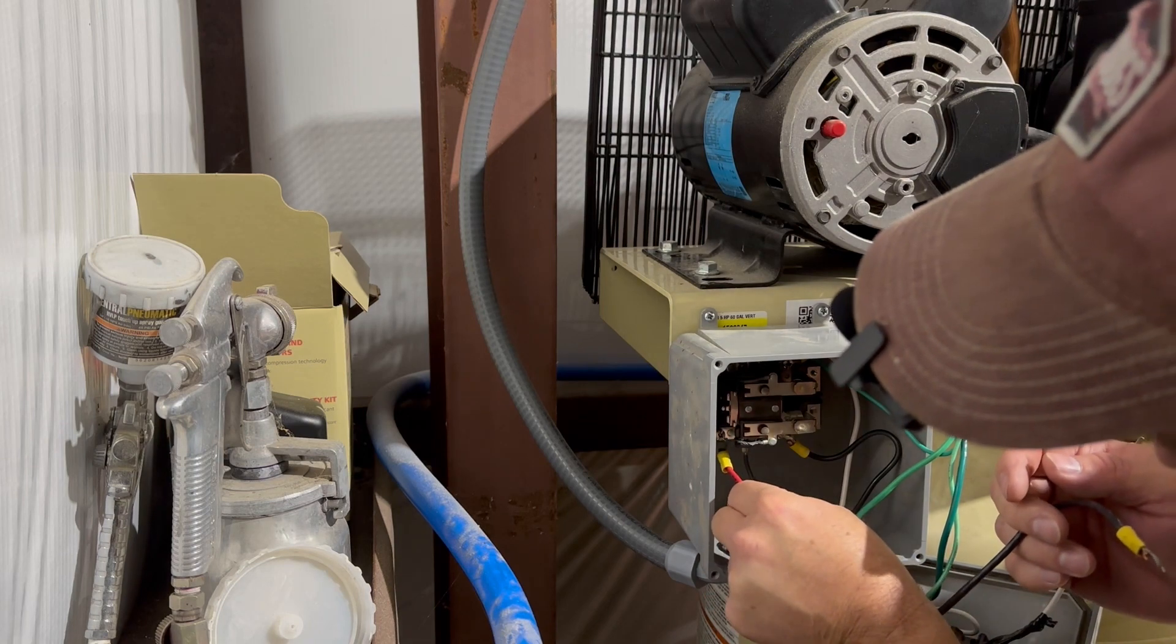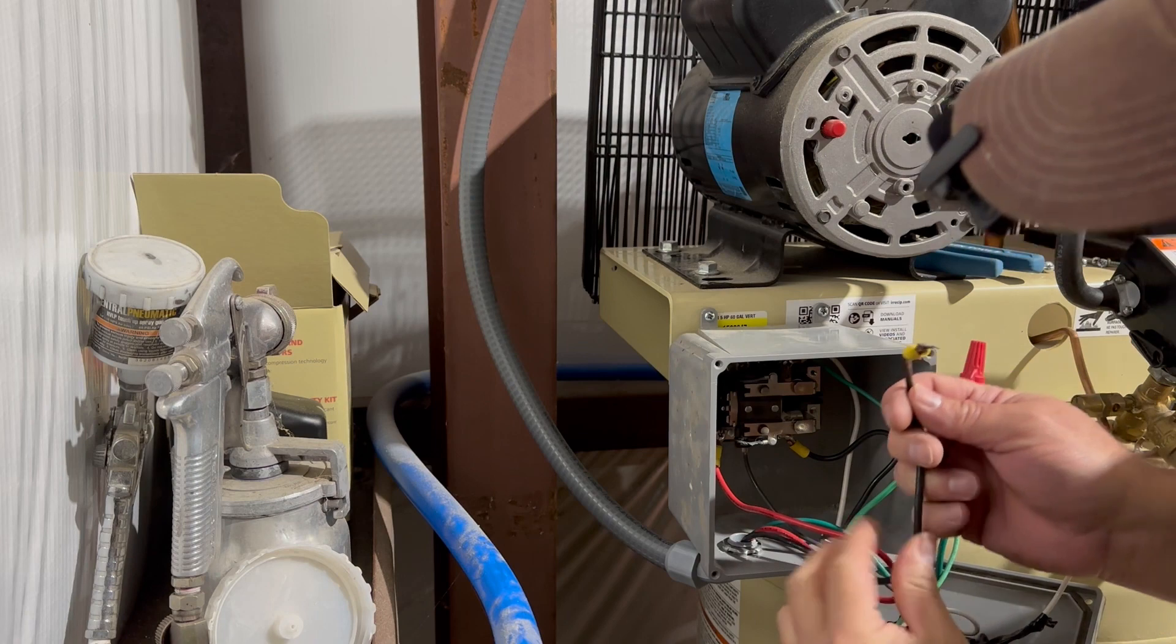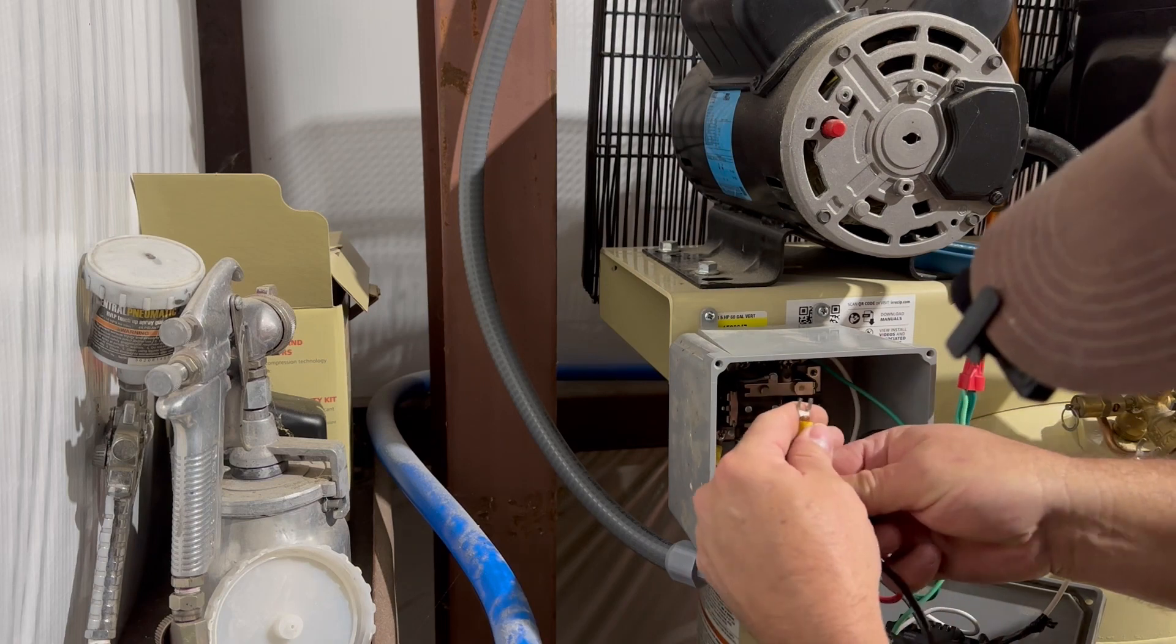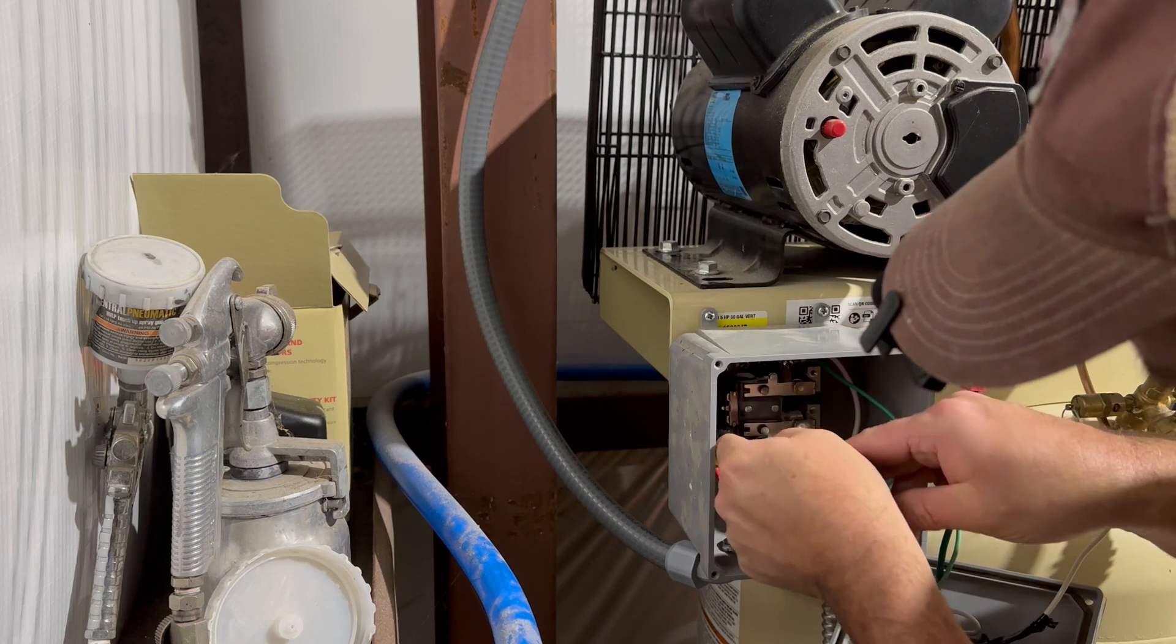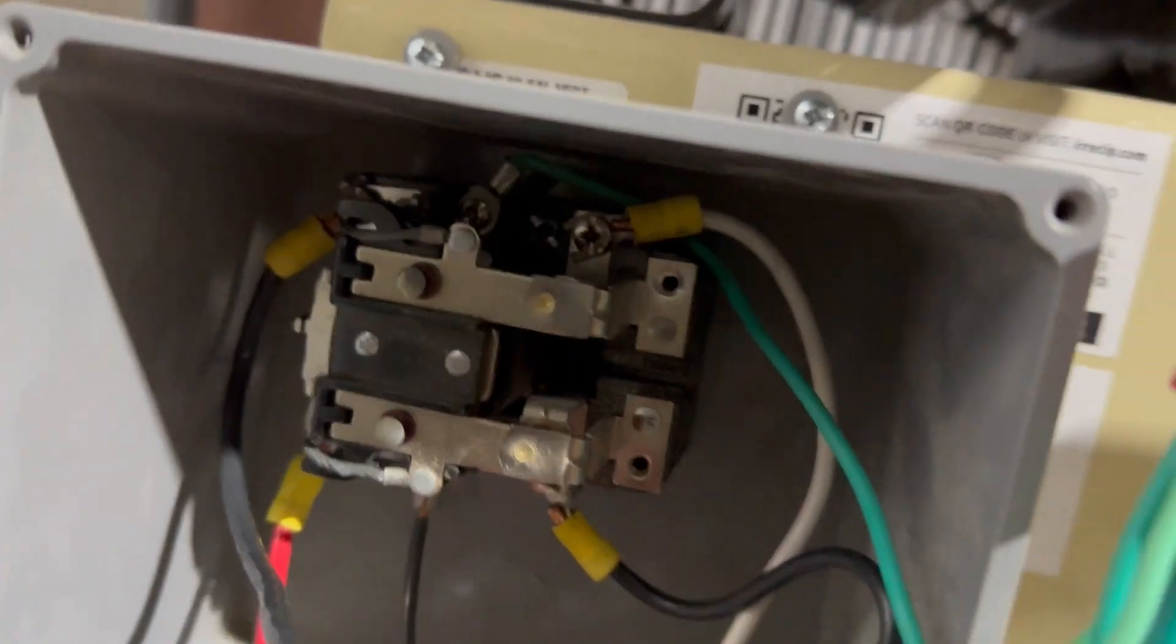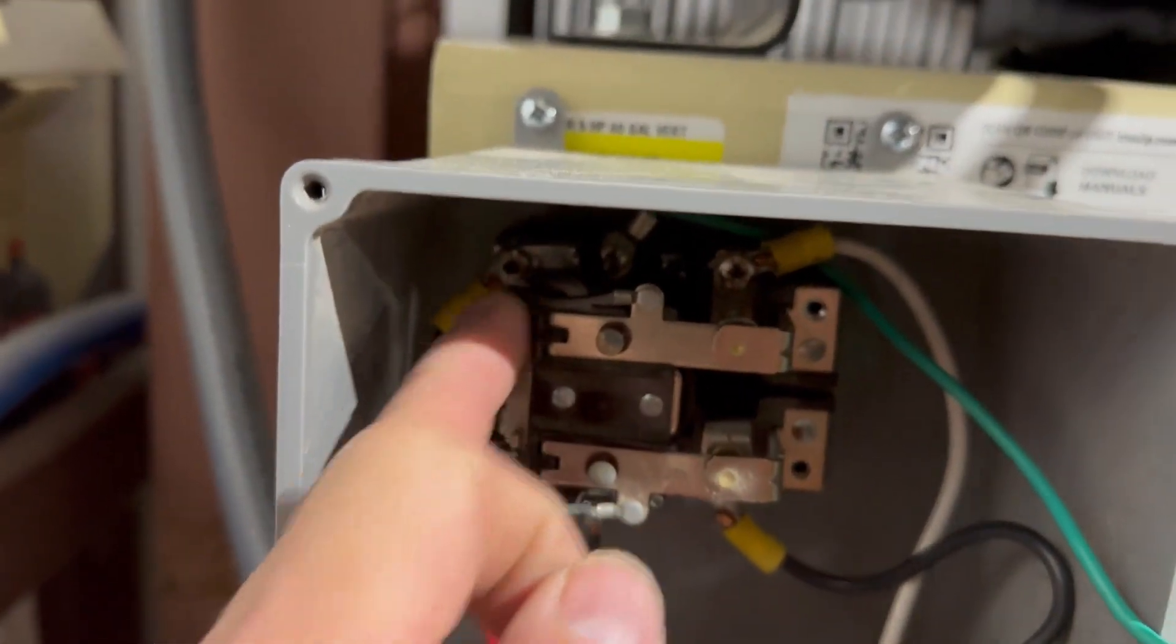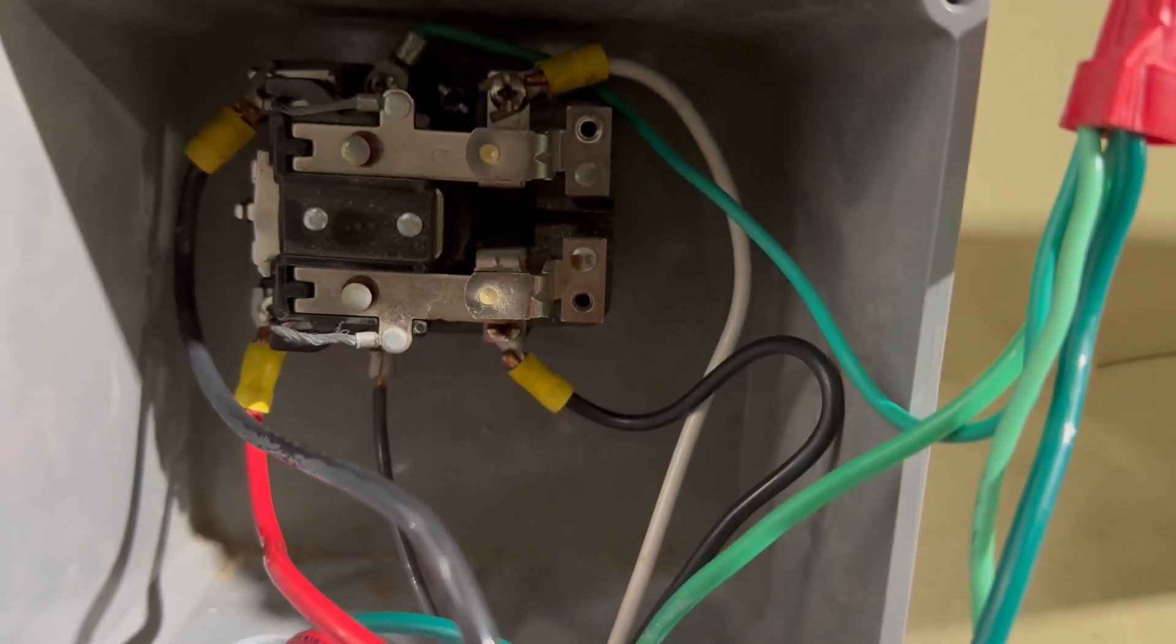So our inputs are going to go one here. Not sure if you can see that or not. I'll show you in just a second. So we've got the red that's going to this side of the relay and the black that's going to that side of the relay. Now depending on your wires, you may just have two blacks.